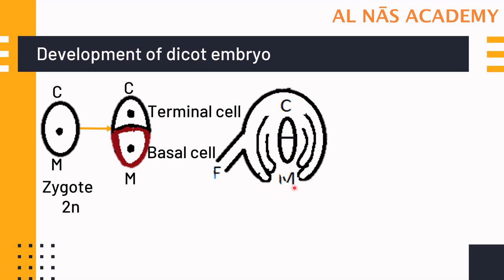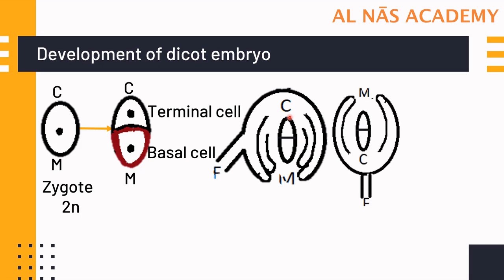The basal cell is towards the micropyle and the terminal cell is towards the chalazal end. In the anatropous ovule, the lower cell is basal and the upper cell is terminal. However, in the orthotropous ovule, the upper cell is the basal cell and the lower cell is the terminal cell, because the micropyle is above and the chalaza is below in orthotropous ovules. So remember: the cell at the micropyle end is basal, and the cell at the chalazal end is terminal.